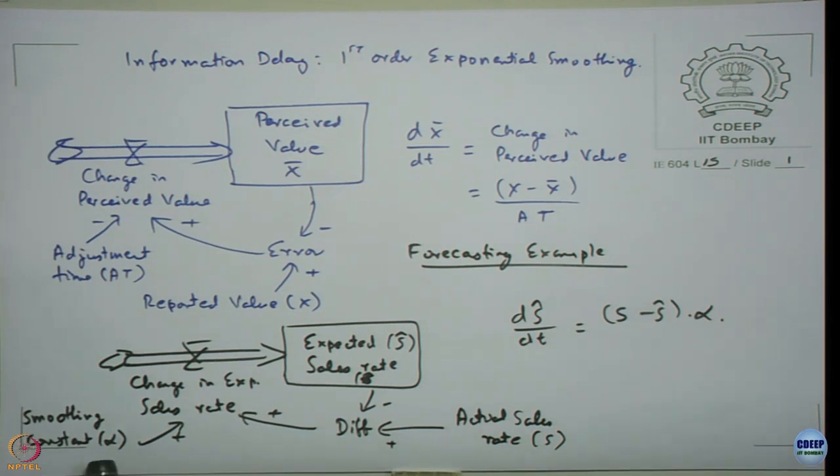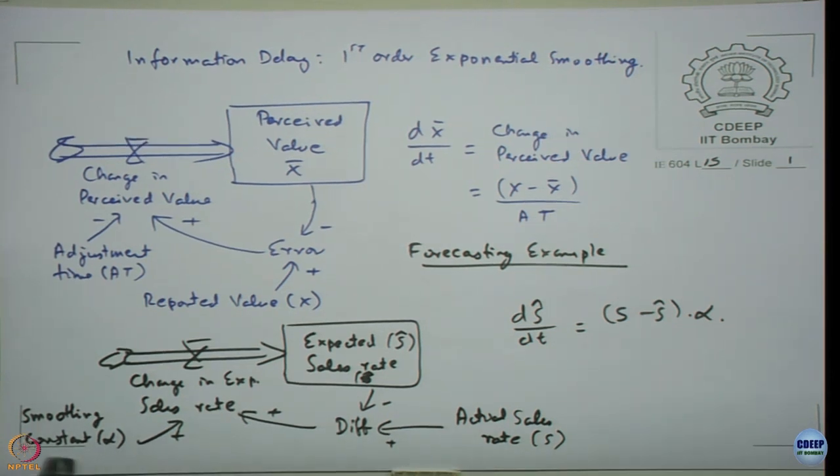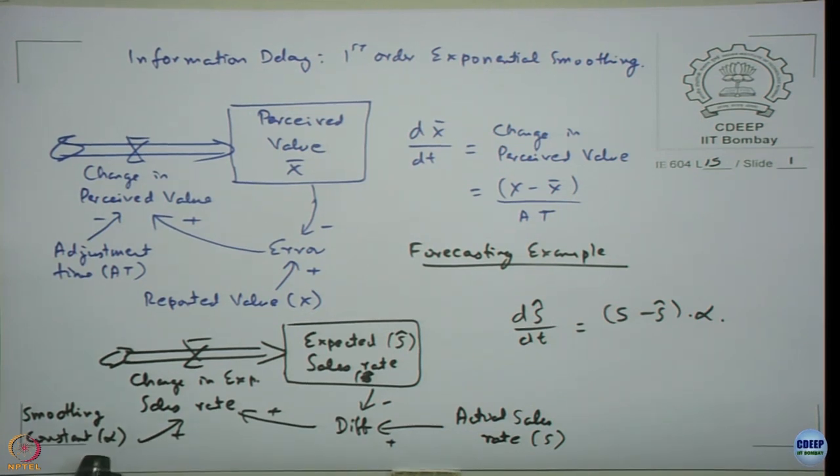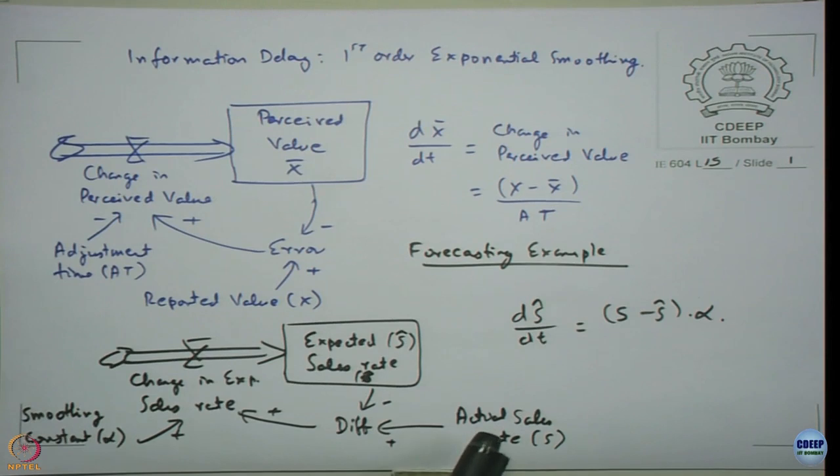So if the alpha is very small, that means I am not giving too much weightage to the new value of sales. I keep closer to the old value of sales. If alpha is 1, that means whatever the difference, I am going to immediately react to the new value of sales. If sales jump to 120, I want to immediately adjust for that and keep reacting.